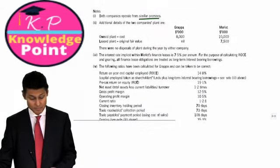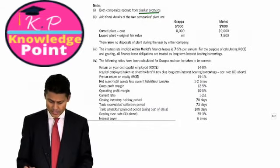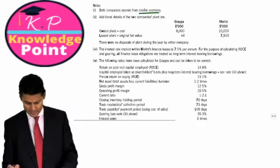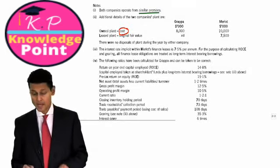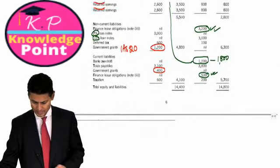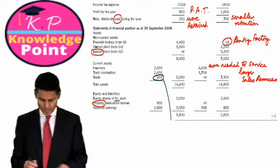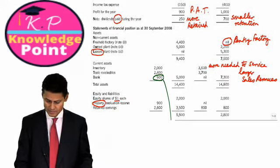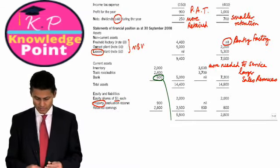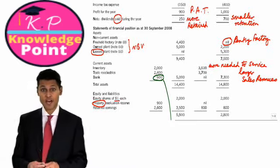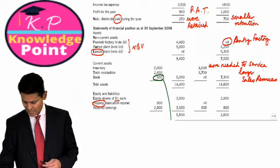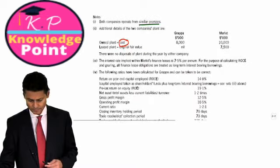What else does that very revealing second page give us? Additional details of the two companies' plant are as follows. Owned plant cost is 8,000, and the other one's cost is 10,000. Let's flick back to the previous page immediately to see if we can pick up the clue. Are we happy that the owned plant is 5,000? These are all netbook values. Carrying values after depreciation, accumulated depreciation.